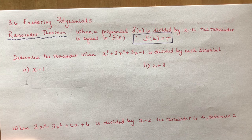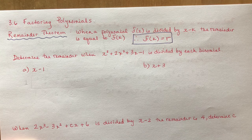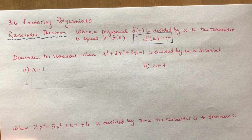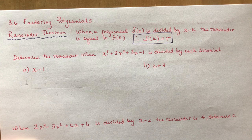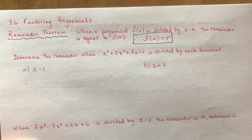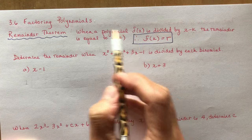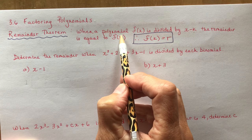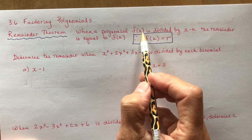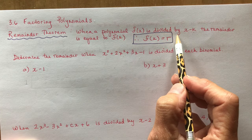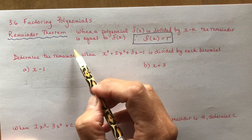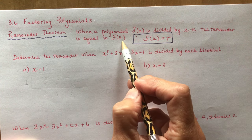Now we're factoring polynomials and today we're going to talk about two of the key theorems to factoring polynomials. The first is called the remainder theorem, and all it says is that when you divide a polynomial f(x) by x minus k, the remainder is equal to f(k).